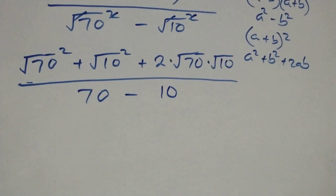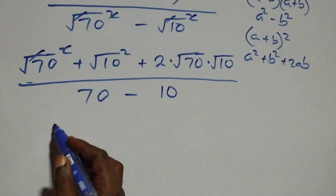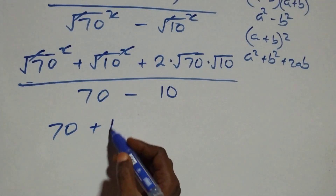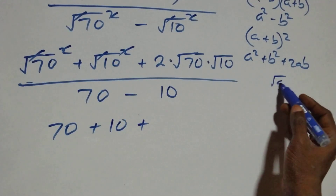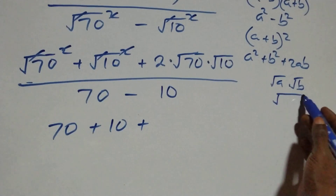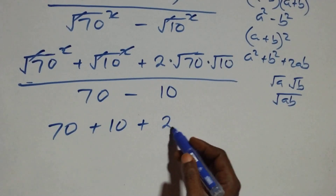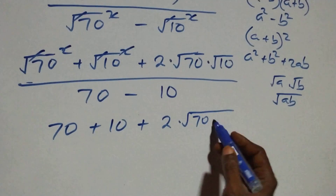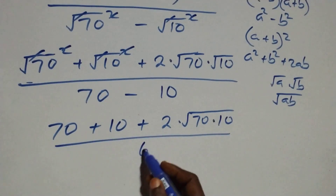Expanding the numerator: square cancels square root, giving seventy, plus ten, plus two times root(70 times 10). Using the rule root a times root b equals root(a times b), we combine to get two times root of 70 times 10. The denominator is 70 minus 10, giving sixty.